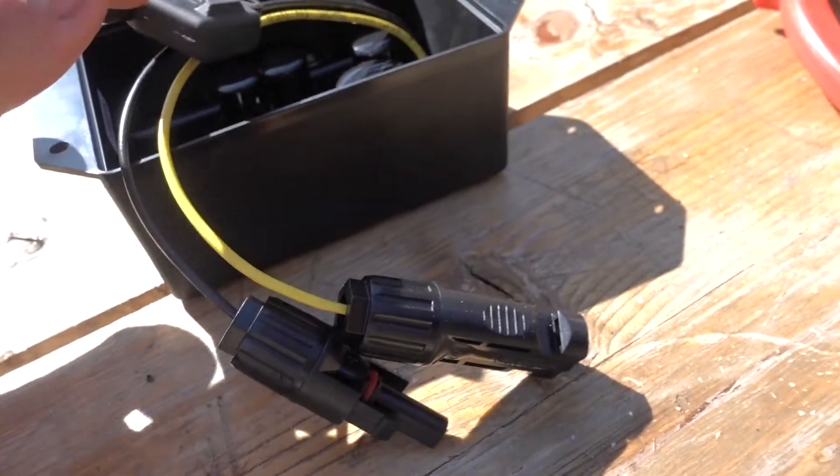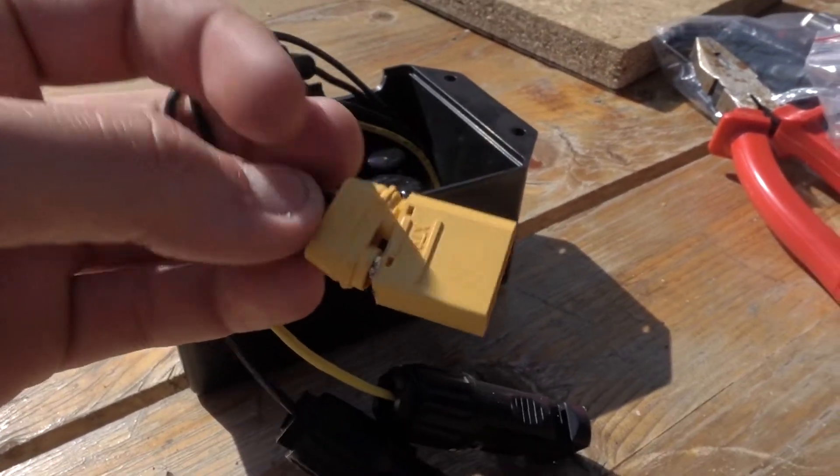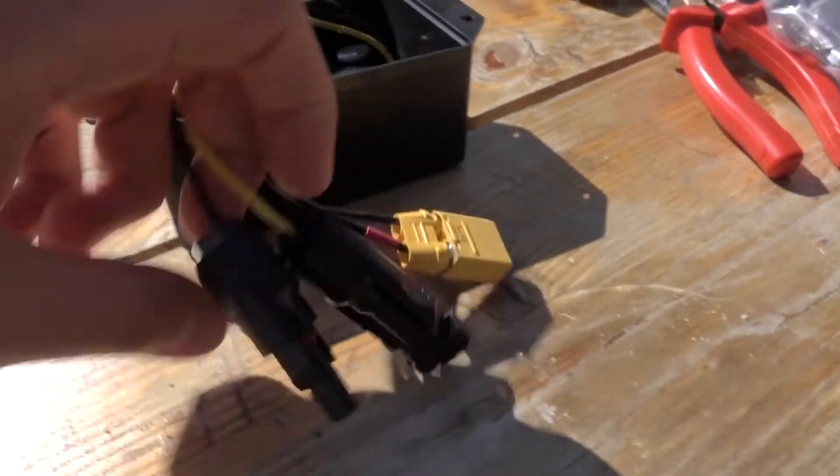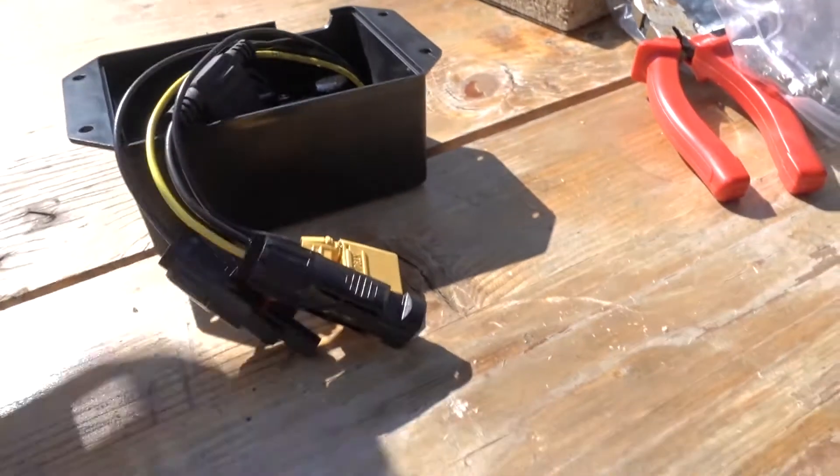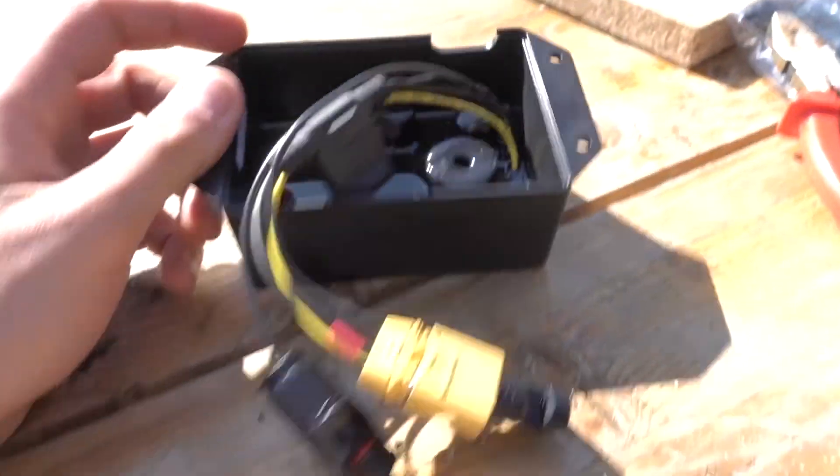Well, we're all soldered up. Not done a great job on the XT90 connector, because these things warp as you heat them up. But I've got the two solar panel connections, and this is obviously the battery connection. And they're pretty good to go.